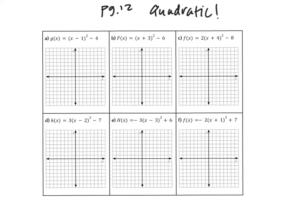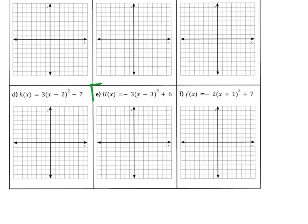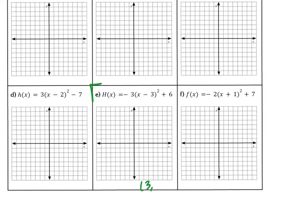I want to do part E. So that one's negative. My vertex — I could have scooched this in — my vertex is 3, positive 6. I'm going to plot that first, and these are just going by ones. 2, 4, 6. So 3, positive 6 is here. The important thing to recognize is I have this negative and a factor of 3, so I have a stretch. My first jump is going to be down 3 on both sides. So it's actually here. Let me erase those other dots.